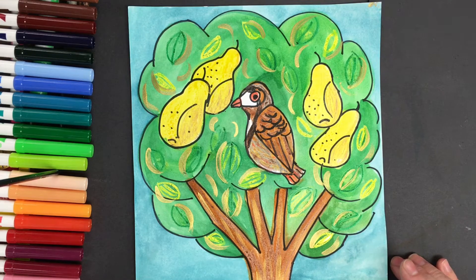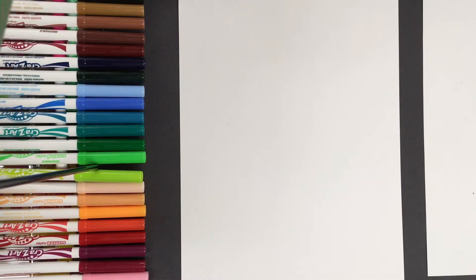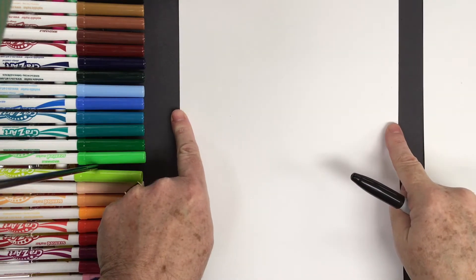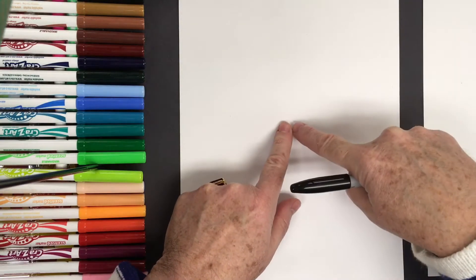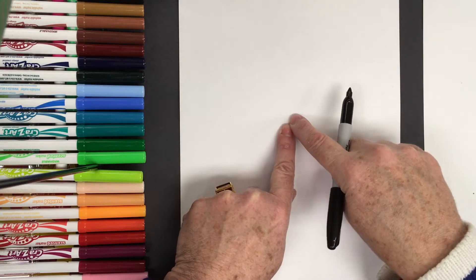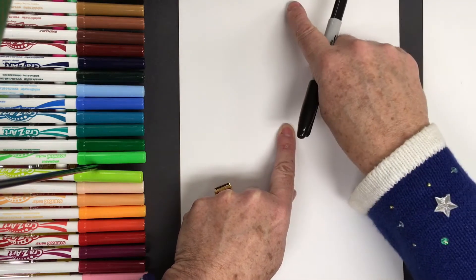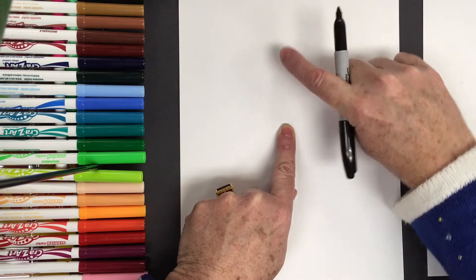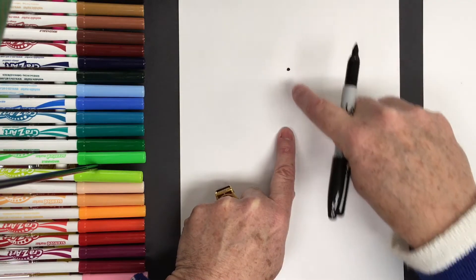Now I'm going to show you how I draw my partridge in a pear tree. To start the partridge, I'm going to find the center of my paper. I look from side to side and find the middle, and then from top to bottom. From the very center I'm going to jump up halfway, so halfway between the middle and the top of my page, and I'm going to put a dot. This would be one-fourth of the page.